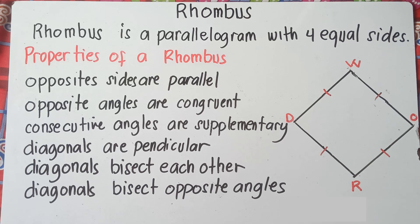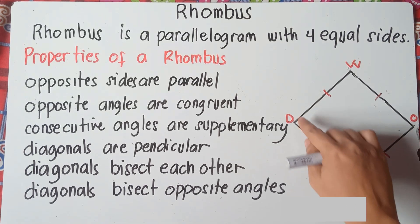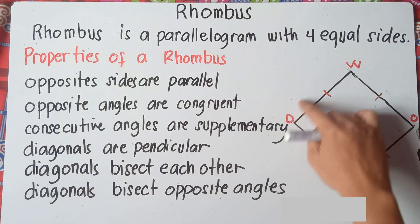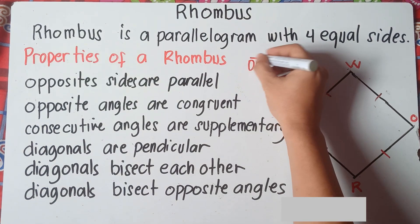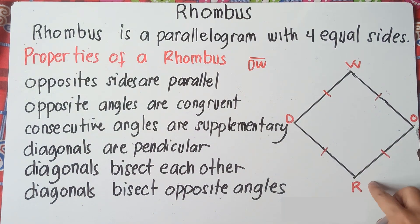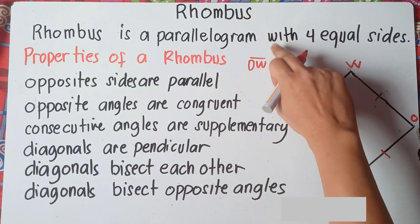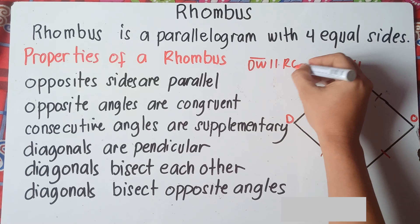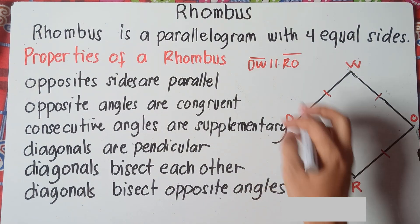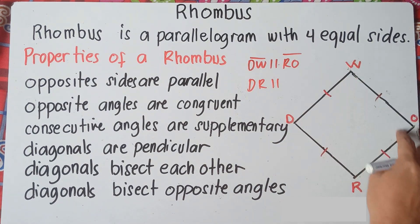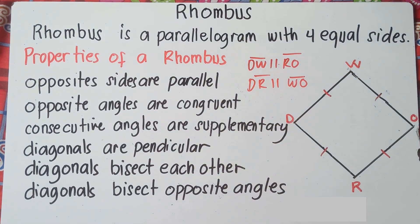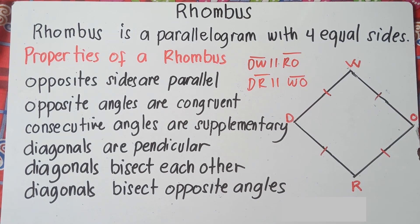So the properties of a rhombus — let's start with number one. It says that the opposite sides are parallel. Therefore, segment DW is parallel to line RO, and DR is parallel to WO. That's according to the first property of a rhombus.